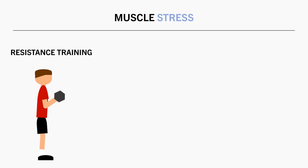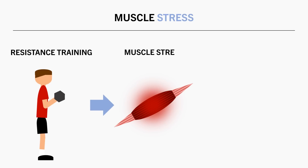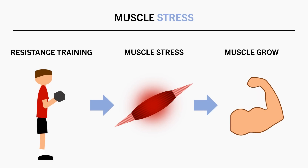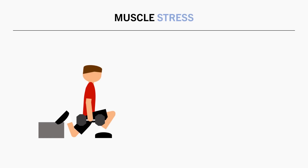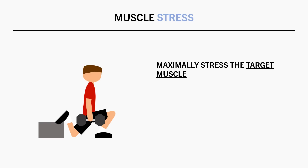Before comparing the effects of compound versus isolation lifts on muscle growth, we first need to establish an important principle: the concept of muscle stress. Muscle growth occurs as a result of resistance training which induces stress to a muscle, resulting in muscle growth as an adaptation. The tissues don't know and don't care whether the exercise was a compound or isolation lift — they only recognise stress and adapt accordingly. So essentially, the goal for hypertrophy training is to maximally stress the muscle we are trying to target.